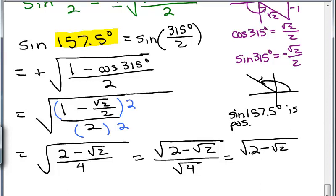Thankfully, that's a perfect square. So I can now just write this as square root of 2 minus square root of 2, that's all under the square root sign. And in the denominator, square root of 4 is 2. So I have simplified this as much as I can because I've rationalized the denominator - the denominator doesn't have a square root anymore. And so this is the answer for the sine of 157.5 degrees.